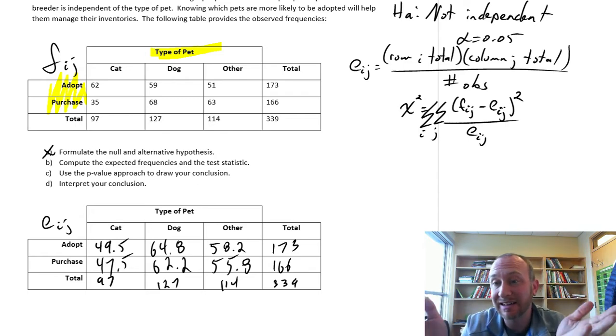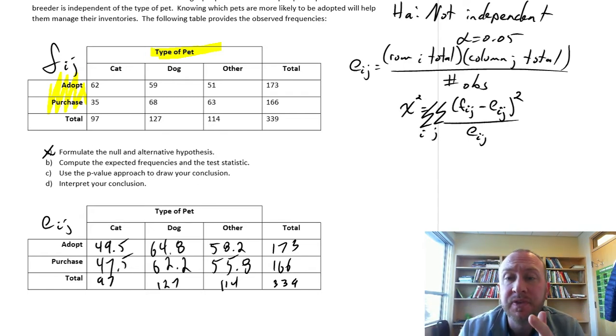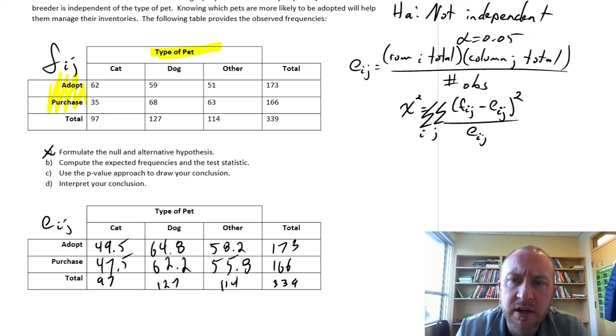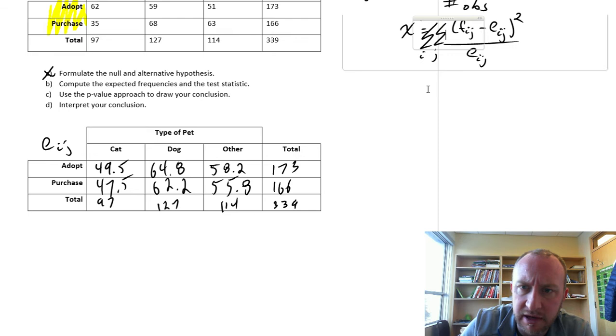divide it by the expected value, and add those together across all columns and rows. So it's exactly the same formula that we used for the test for equality across proportions. So it's a lot of familiarity here for this type of test.